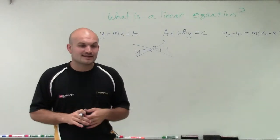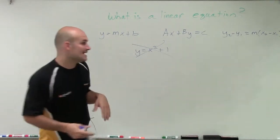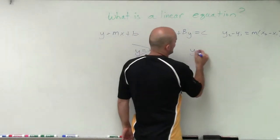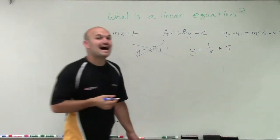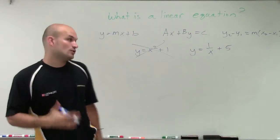The next thing we have is we cannot have a variable in the denominator. So if I have y equals 1 over x plus 5, that is not going to produce a linear equation.